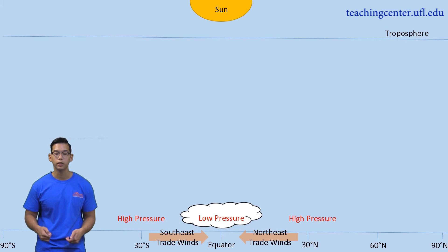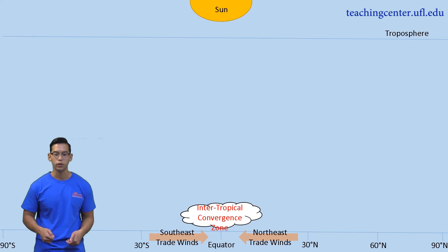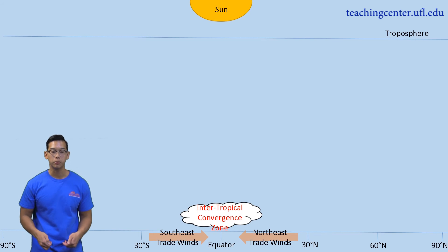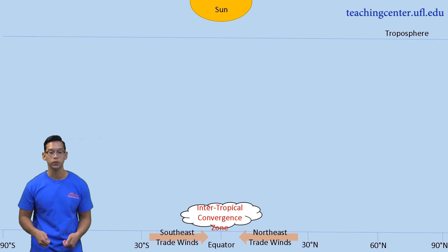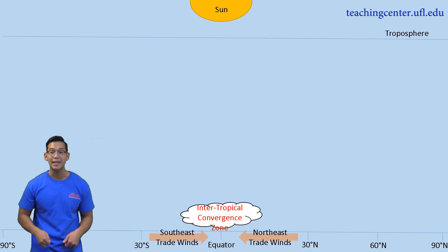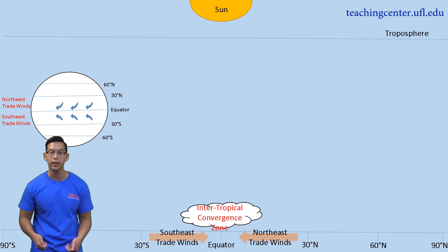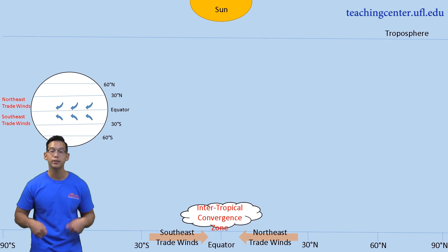When these winds return and converge at the equator, they create the Intertropical Convergence Zone, or the ITCZ. This movement of air molecules from 30 degrees latitude to the equator, in combination with Coriolis forces, subsequently creates our northeast and southeast trade winds. This is especially evident when we view these trade winds from a global perspective. Trade winds travel from east to west, converging back at the equator.